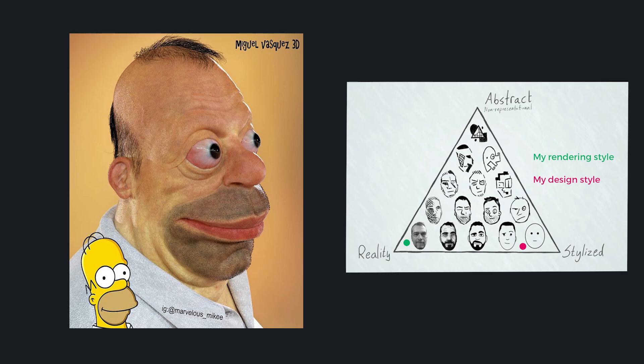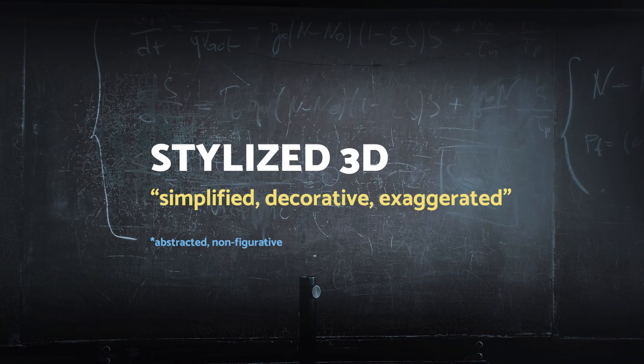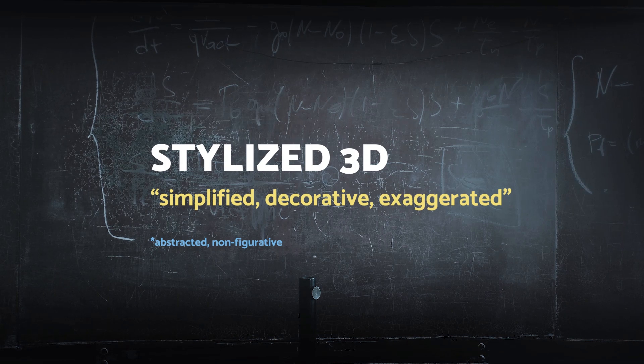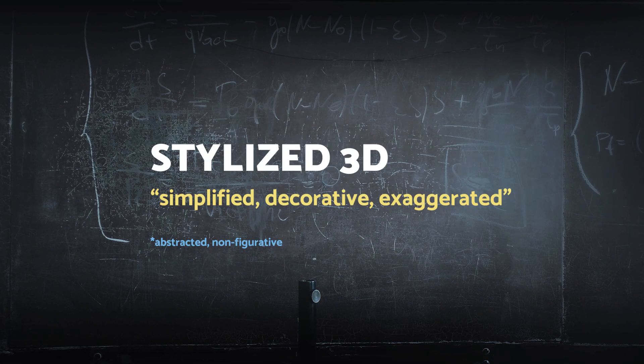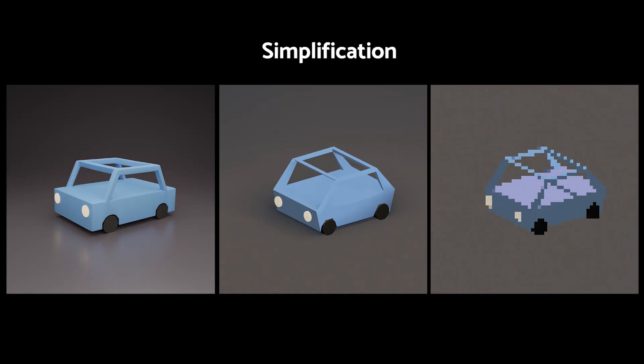Separating these things too much could lead to interesting results: cartoonish proportions plus ultra-realistic rendering — and bam, uncanny valley, where you no longer know if it's NPR or not. Amazing experiment by Miguel Vasquez. Sometimes when we say stylized 3D we mean simplified, decorative, and exaggerated, and sometimes also abstracted and non-figurative. Practically, most of the techniques related to creating stylized 3D art boil down to these two things: simplification and exaggeration. Using the toolset of the reductionist, we decide what aspects of the image should be discarded and what should be left intact — like do we really need 3D perspective? Do we really need lighting?